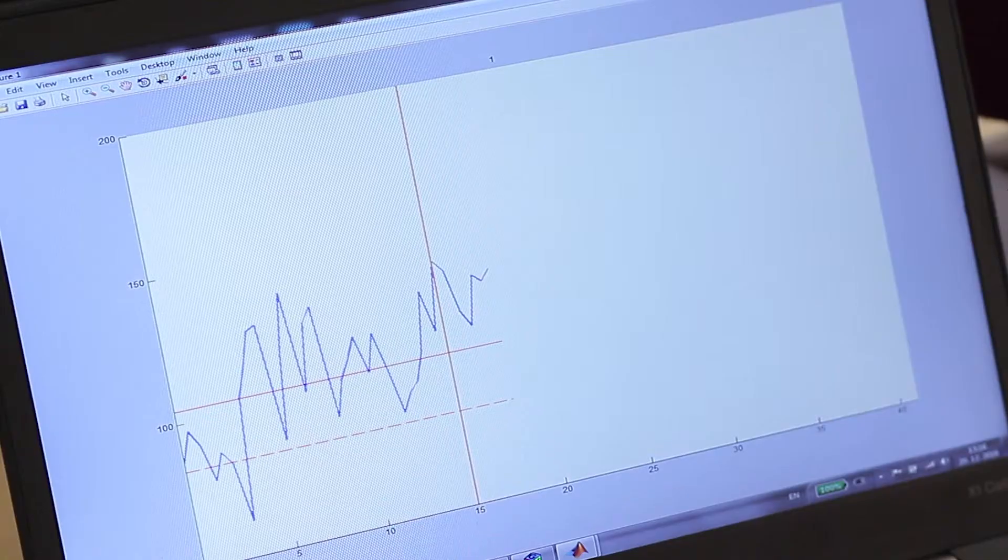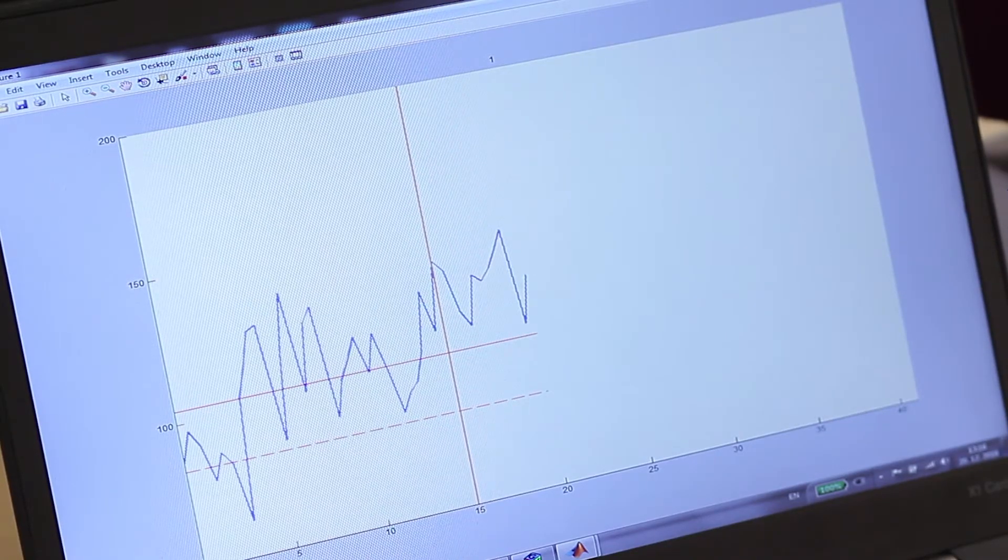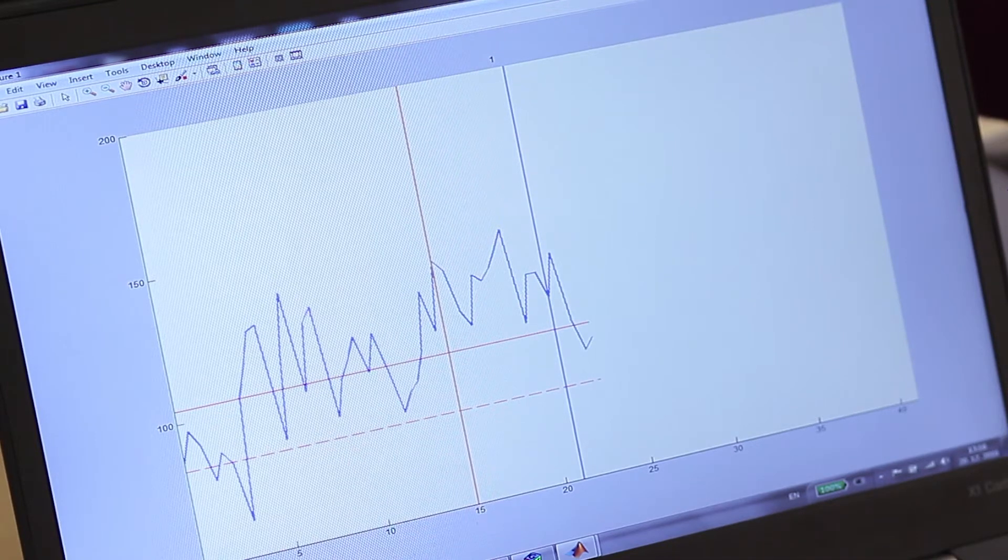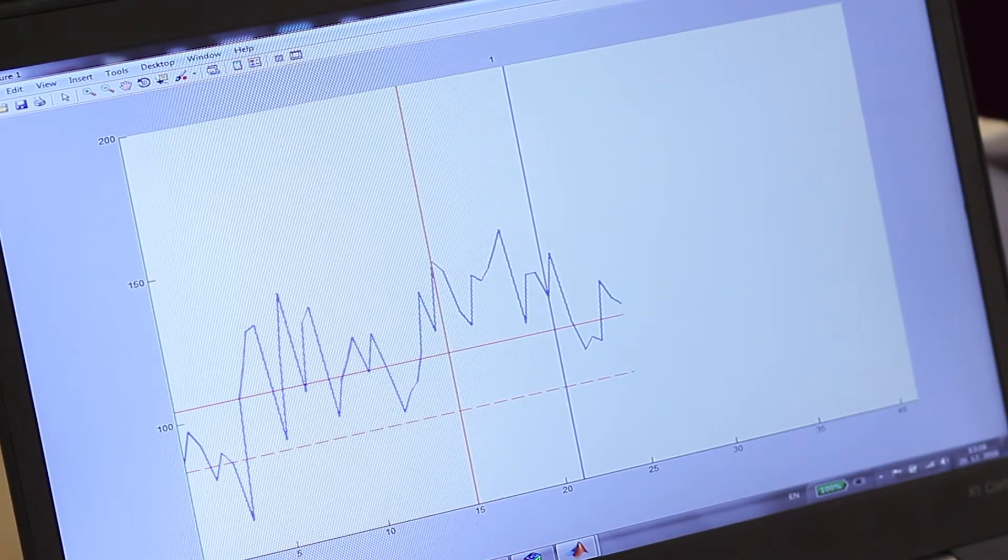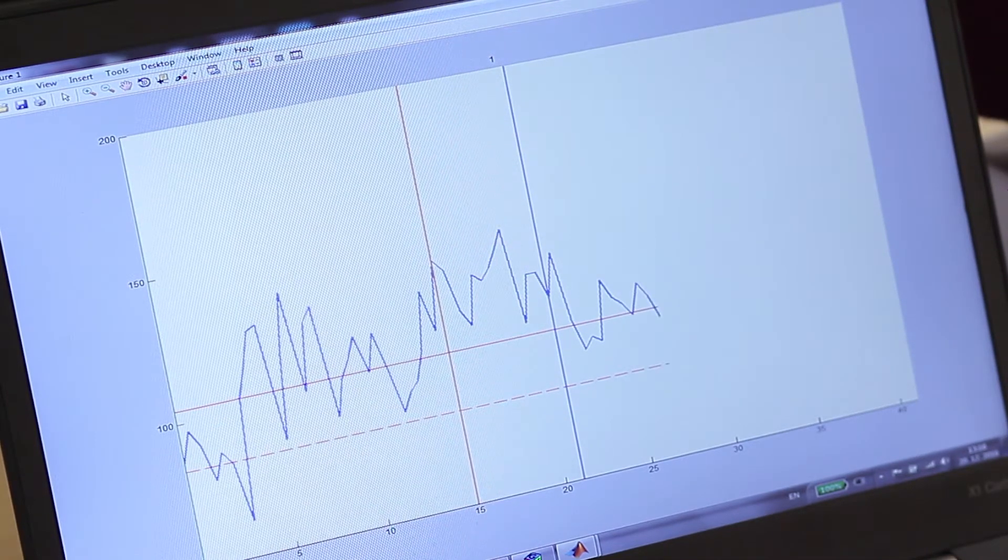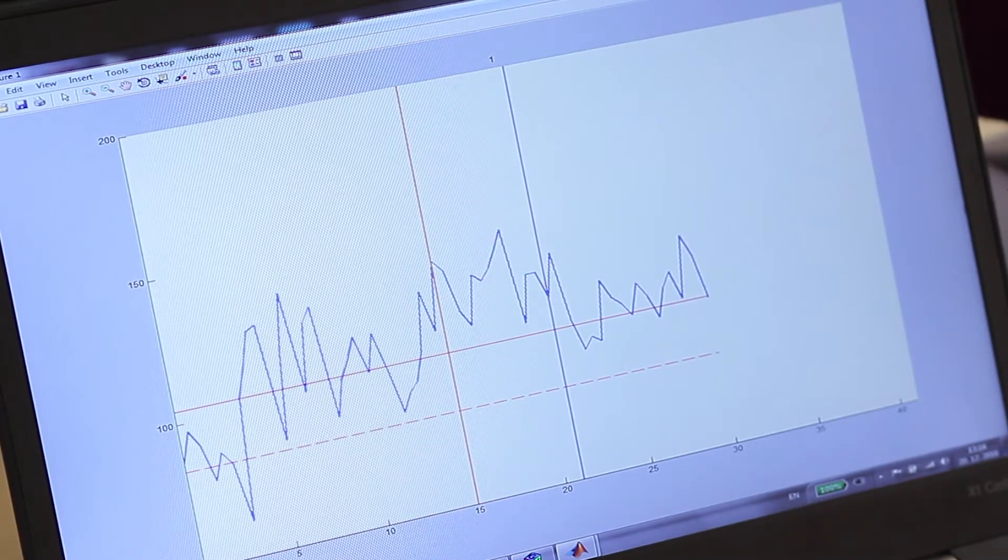The system detects patient's mental imagination of the movement based on the changes in EEG activity in the sensory motor cortical area. This is due to synchronization and desynchronization of the EEG rhythm.